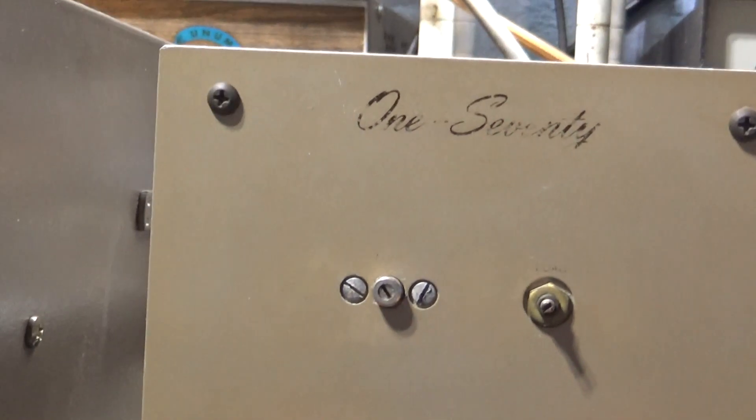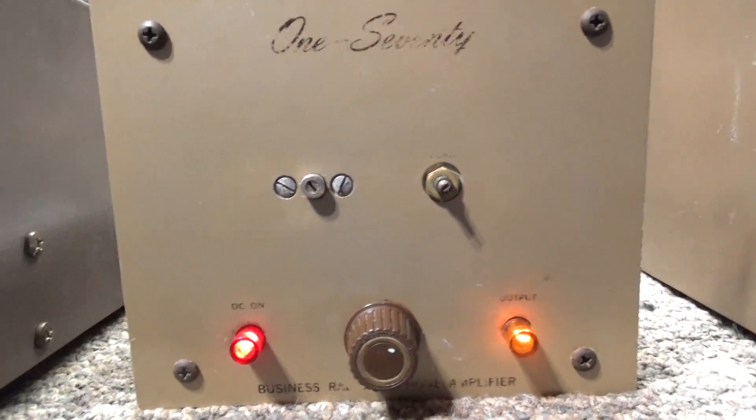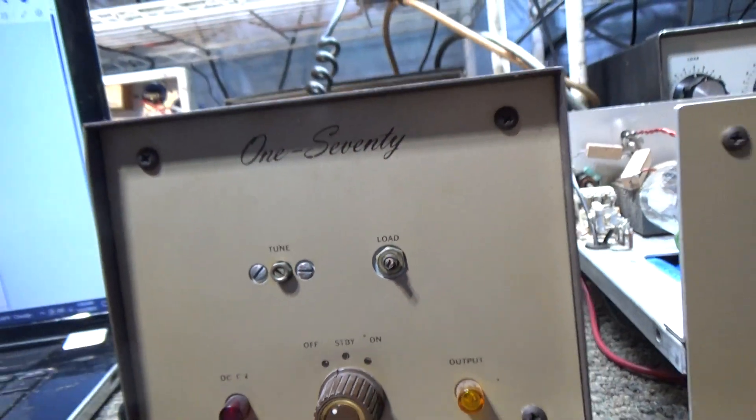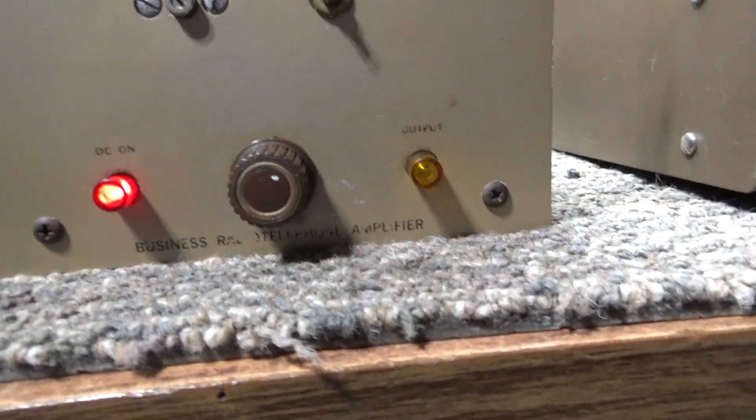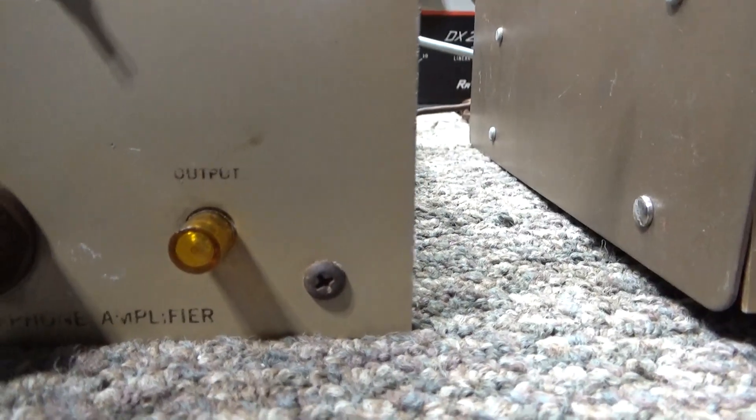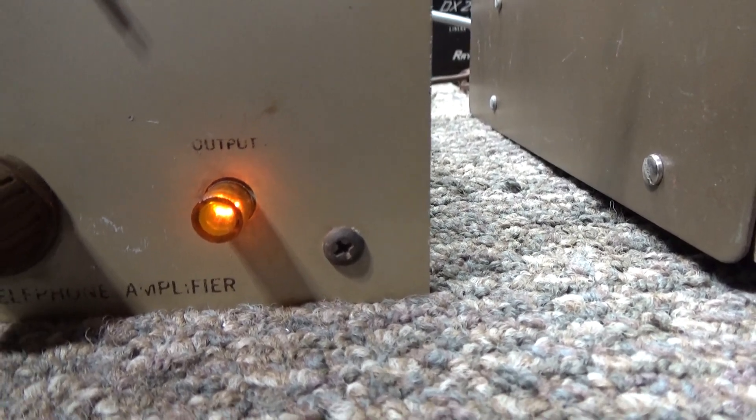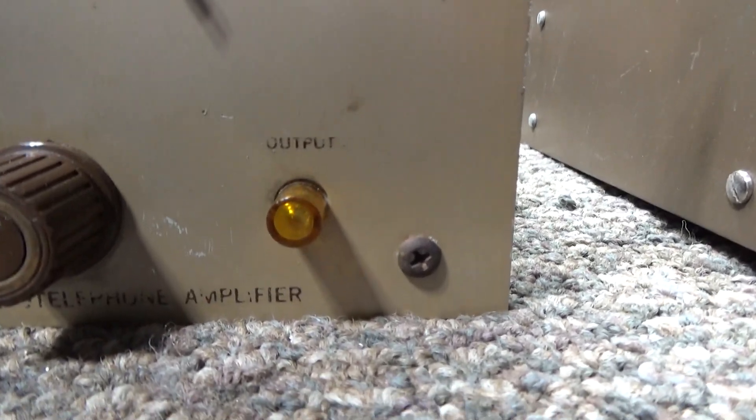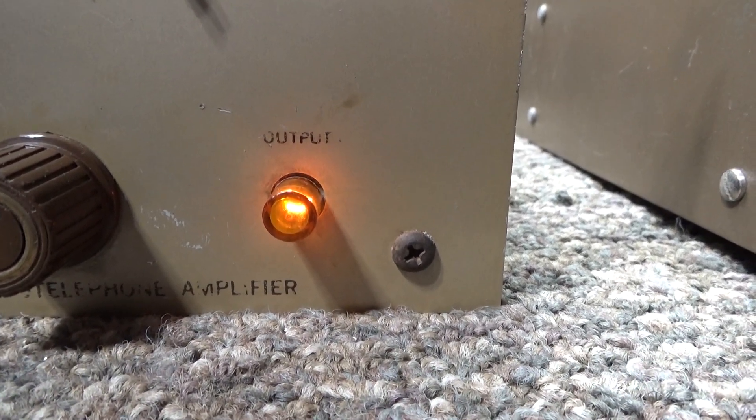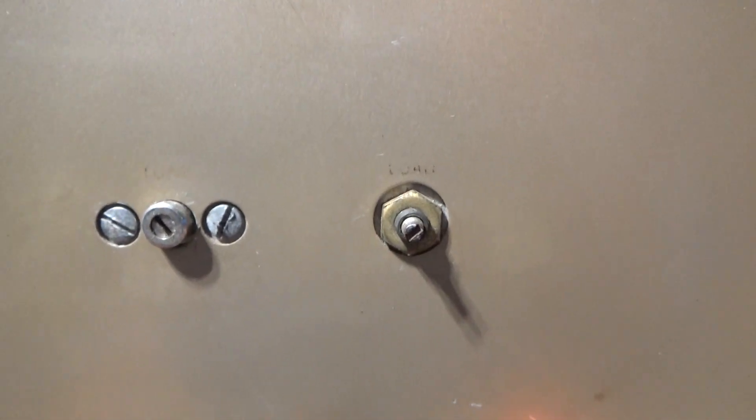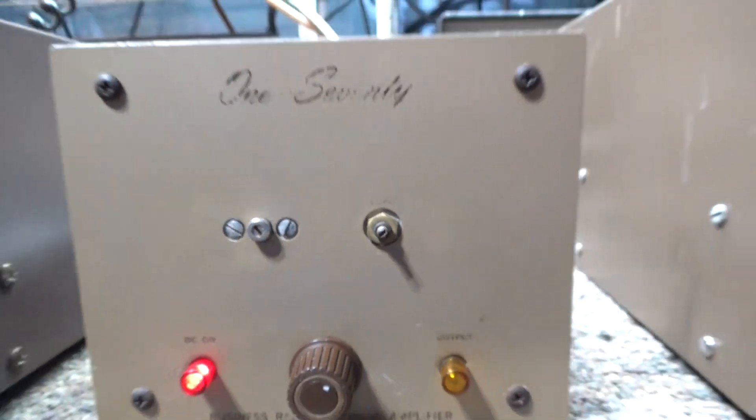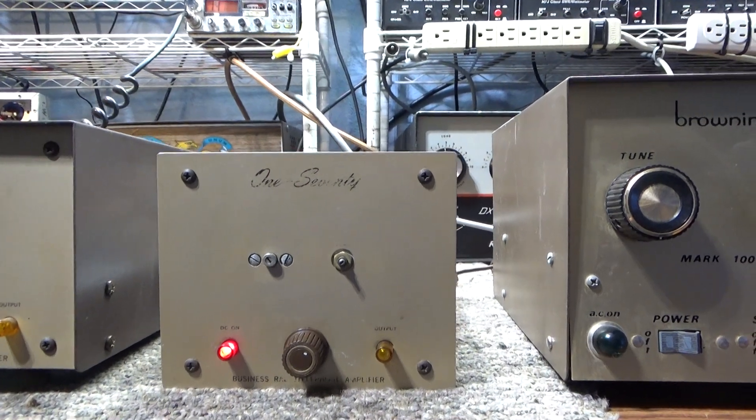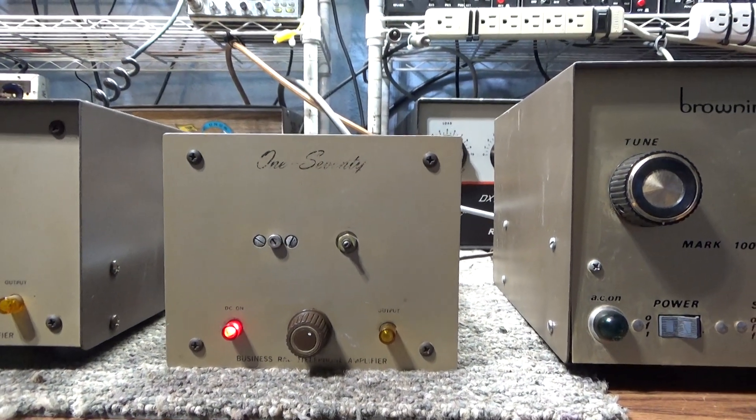Very basic amp, no preamp or nothing. You basically have tune and load just like a normal tube amp, and you got the power-on light and the RF output light that lights up. The more power you get out of it, the brighter that light. So if you don't have a watt meter you can tune for the brightest light. With these mobile amps, they don't have knobs, you use a screwdriver. The idea is to put it in a truck, tune it once and forget about it.